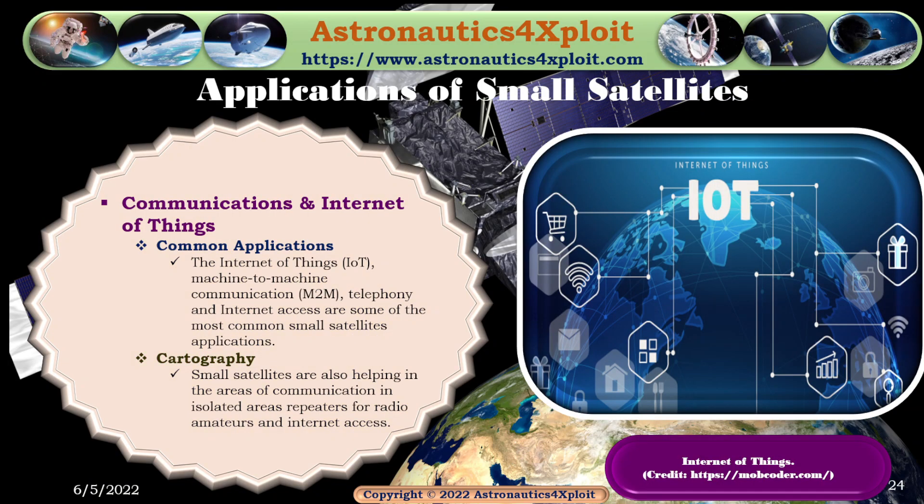Communications and Internet of Things is another application of small satellites. The Internet of Things, machine-to-machine communication, telephony, and internet access are some of the most common small satellite applications. Small satellites are also helping in the area of communication in isolated areas, as repeaters for radio amateurs, and for internet access. This picture shows an Internet of Things concept.